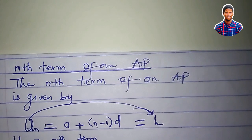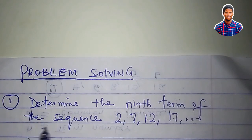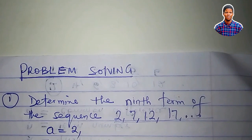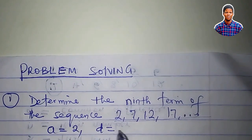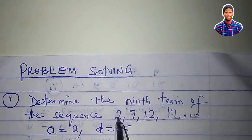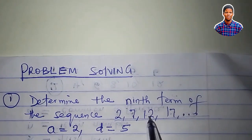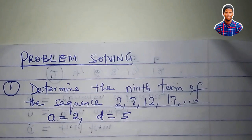Let's solve some basic problems on AP using this formula. I want to determine the ninth term of this sequence that I have here. What is the first term of the sequence? Two. What is the common difference? Five. Seven minus two is five. Twelve minus seven is five. The common difference is five.